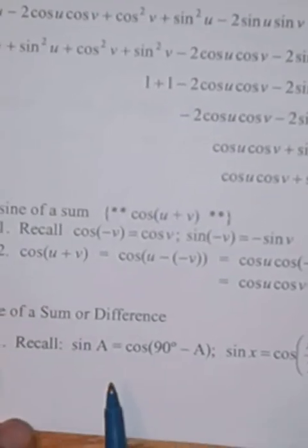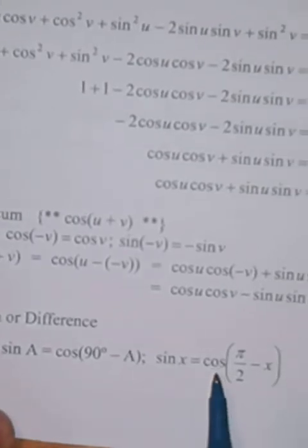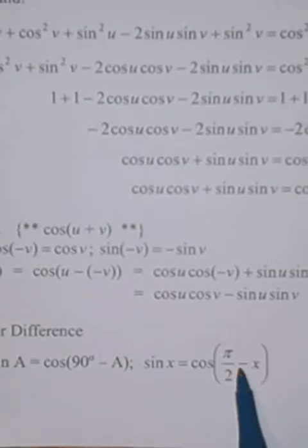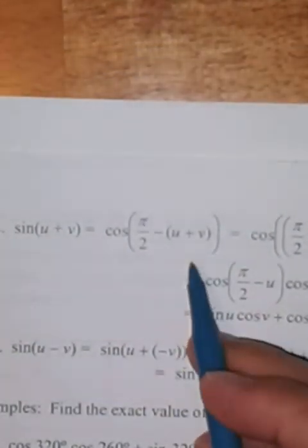For the sine formulas, we use the co-function identities. Recall that sine x equals cosine of (pi over 2 minus x). So sine of (u plus v) equals cosine of (pi over 2 minus (u plus v)). Distributing the minus sign gives cosine of (pi over 2 minus u minus v), which we group as cosine of ((pi over 2 minus u) minus v). Now applying the cosine difference formula: cosine(pi over 2 minus u) times cosine v plus sine(pi over 2 minus u) times sine v.